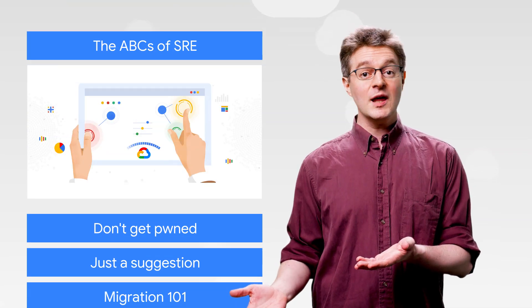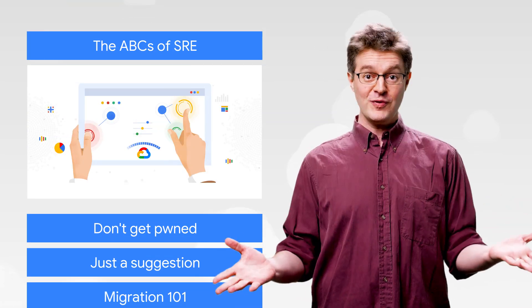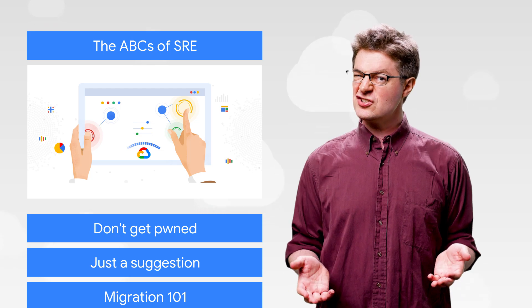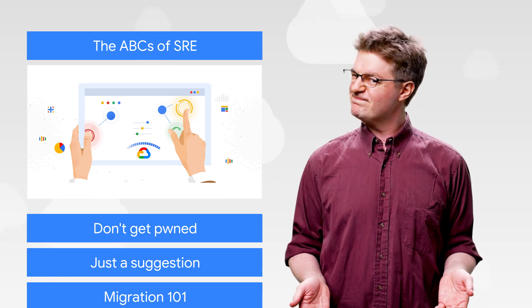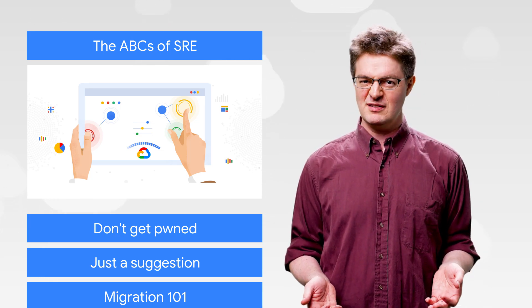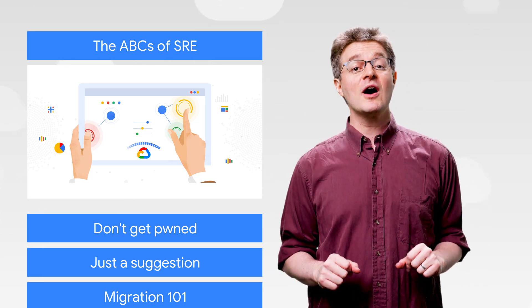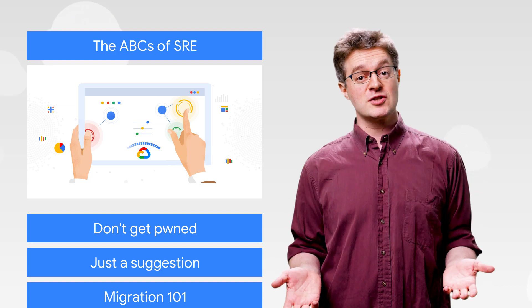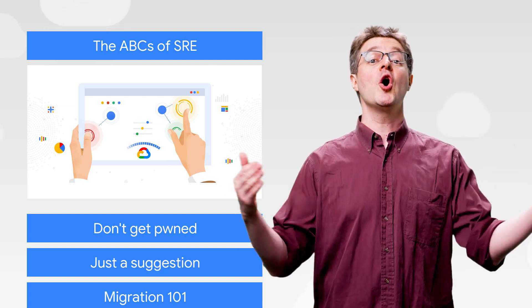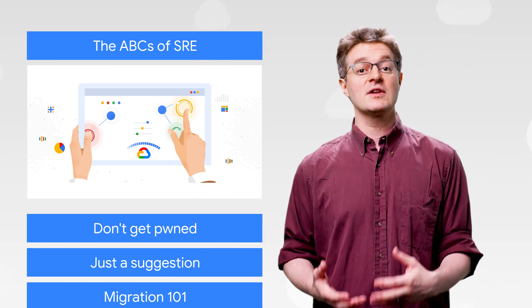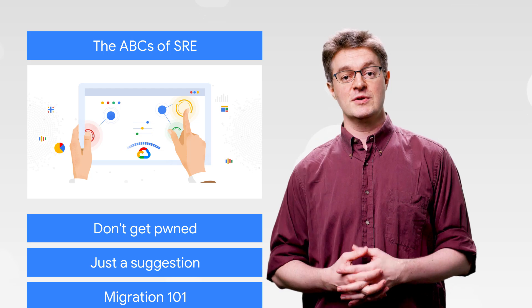So your app is scaling up swiftly to meet audience adoption. Great. But continuing to add engineers to your ops team? Not so great. This week, here's the story of how Google originally solved this problem as our own network grew, by developing an intuitive set of site reliability engineering principles.